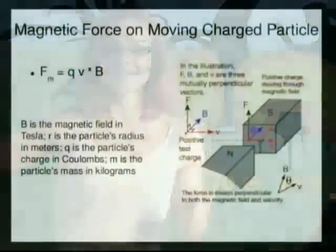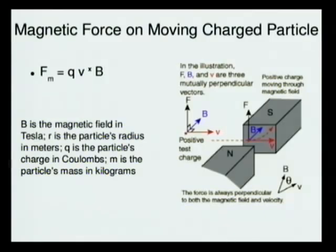Take your right hand. Your thumb is the direction of the velocity of the particle. So you have a particle moving like this. Let's say you have a magnetic field directed in the direction of the rest of your fingers. Then the force acts where your palm is. So V cross B is the force, and Q is just a scalar.